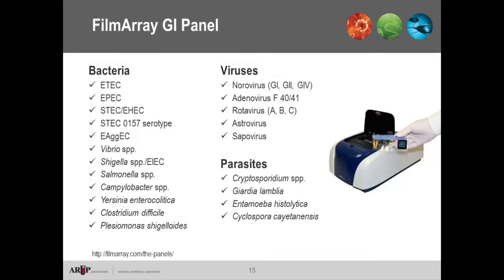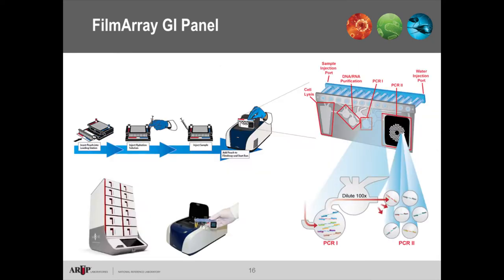The last method is the FilmArray GI panel, which has the broadest list of bacterial pathogens, viruses, and parasites. The FilmArray uses a nested PCR — all steps are done within a pouch — with two PCR stages before a fluorescence detection array in the final stage. This can be run on a single platform or on a multi-modular tower called the Torch, which was recently FDA approved.